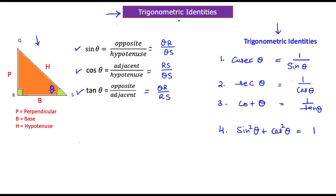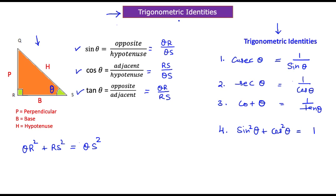Referring to the diagram, theta is the reference angle with perpendicular, base, and hypotenuse. The Pythagorean theorem tells us that QR² plus RS² equals QS². Now, if we divide this entire expression by QS², the right hand side becomes one since QS cancels with QS.